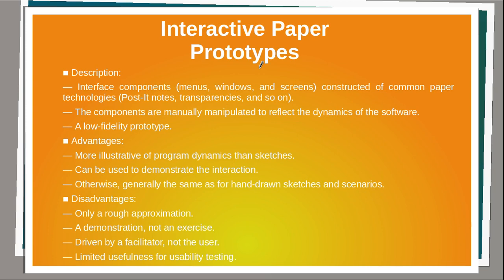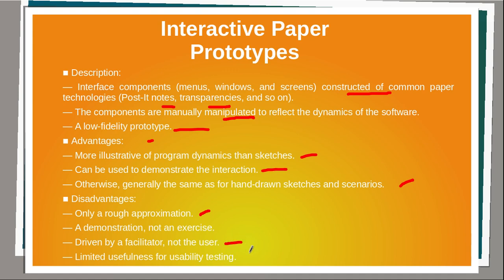Now let's discuss interactive paper prototypes. Interface components — menus, windows and screens — are constructed from common paper technologies such as Post-it notes, transparencies and so on. The components are manually manipulated to reflect the dynamics of the software. This is a low fidelity prototype. Advantages: more illustrative of program dynamics than sketches, and can be used to demonstrate the interaction. Otherwise, advantages are generally the same as for hand-drawn sketches and scenarios. Disadvantages: only a rough approximation, a demonstration not an exercise, driven by facilitator not the user, and limited usefulness for usability testing.